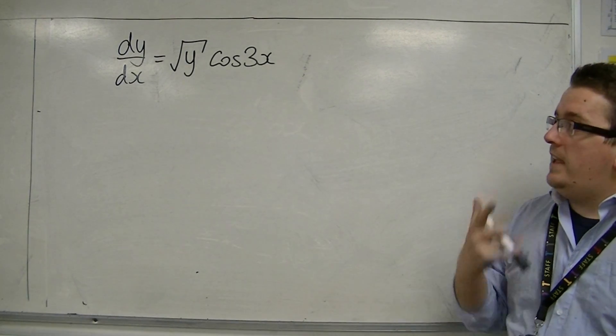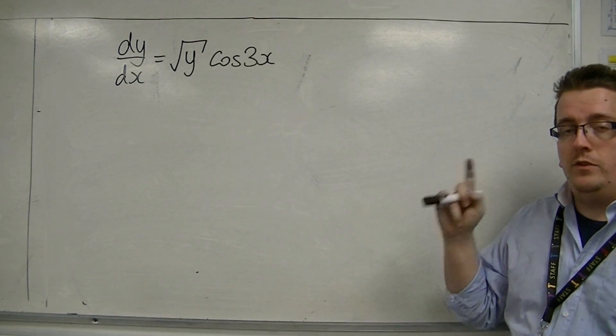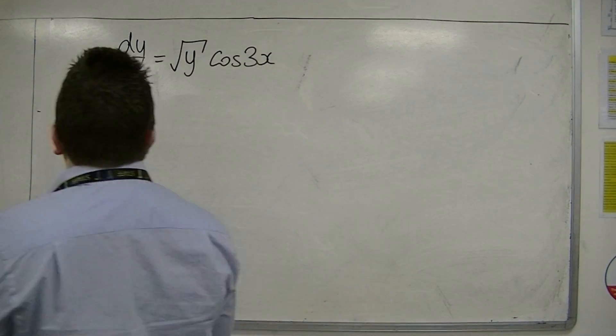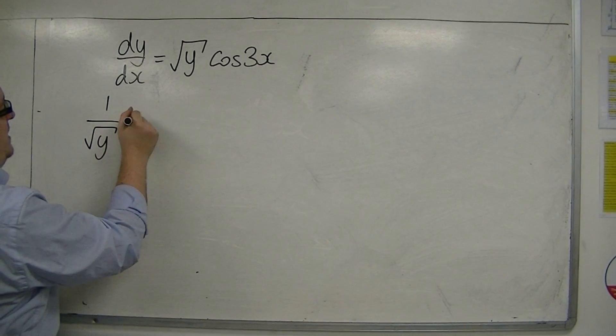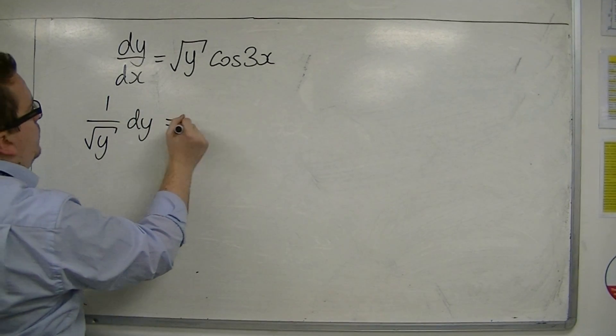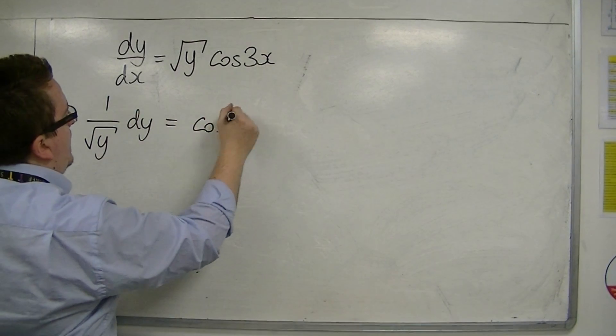Similar approach: move all the x's over to the right-hand side and all the y's over to the left-hand side. So I divide through by root y, we get 1 over root y dy equals cos 3x dx.